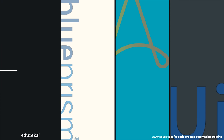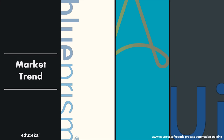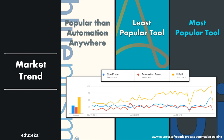Next, comparing these tools based on market trend: according to Google Trends, UI Path emerges as a clear winner, while Blue Prism and Automation Anywhere have almost similar trends going hand in hand. UI Path gives tough competition to the other two tools, with a search volume of around 63,000 — definitely a very big number.